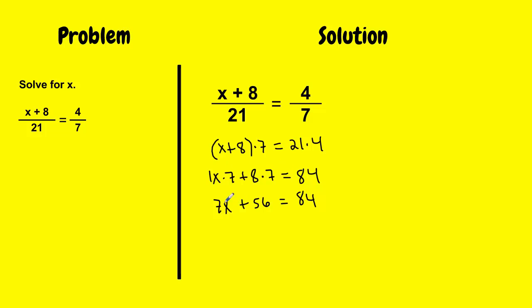Now, if I solve for the variable x using inverse operations, I subtract 56 from both sides. And I get 7x equals 84 minus 56, which comes out to be 28. And then the last step, I divide both sides by 7. And we get x equals 4.